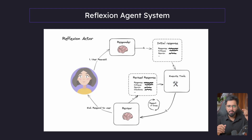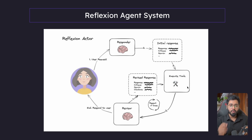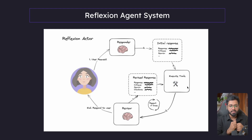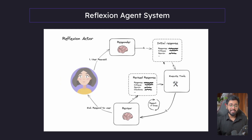So we have different types: we have a human message and an AI message. The initial human message is the first item, the responder chain gives out one AI message, and then this execute tools is going to give out one tool message. In that tool message content, we are going to have all the information. Let us now see how we can implement it.